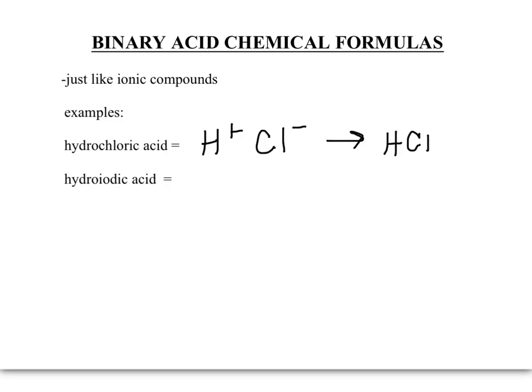Let's look at hydroiodic acid. Hydrogen has a plus one charge, and 'iodic' comes from iodine, which has a negative one charge. Crisscross those charges and you get HI.